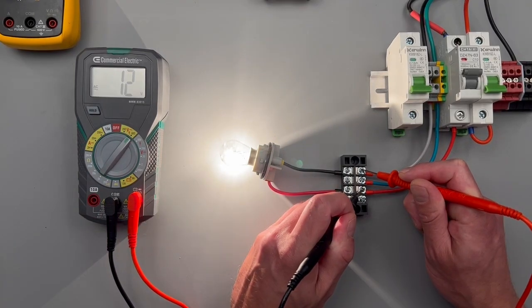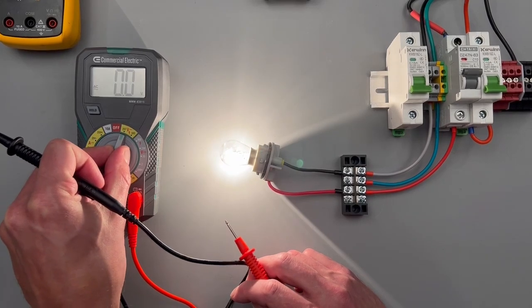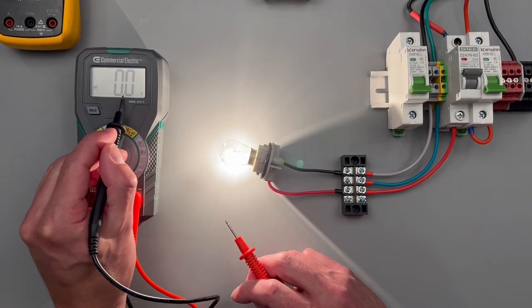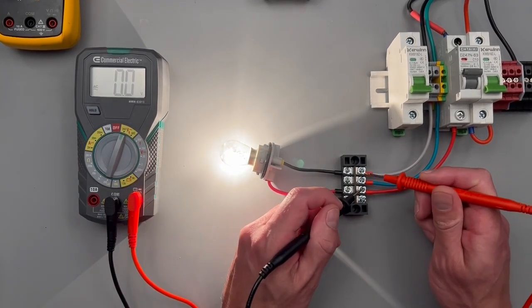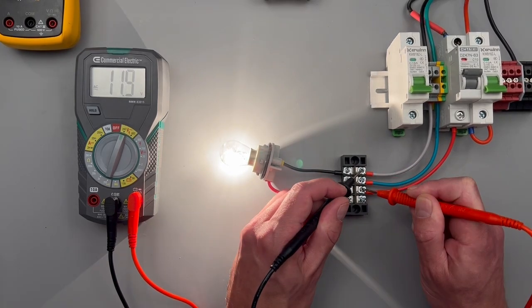If I refine my resolution to the 200 setting, now my meter will have a decimal and it should give me a more accurate reading. Now we're seeing 11.8, 11.9.